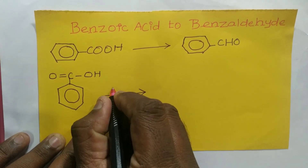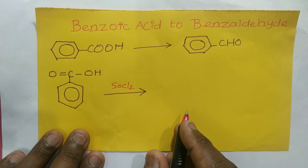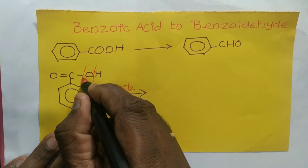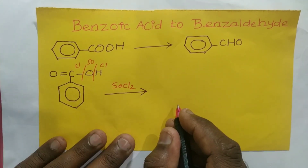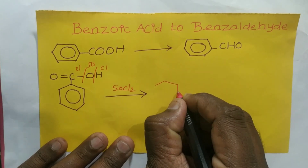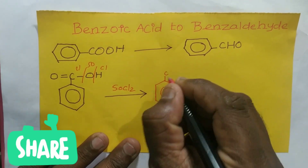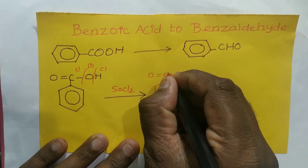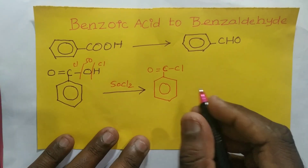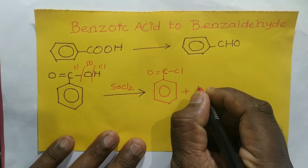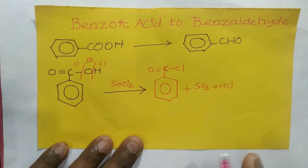If I use SOCl₂, as we know the trick — one more Cl is added — I'll be getting acyl chloride as the product. There is no change in the double bond; COCl is produced. Along with that, SO₂ and HCl are also produced as byproducts.